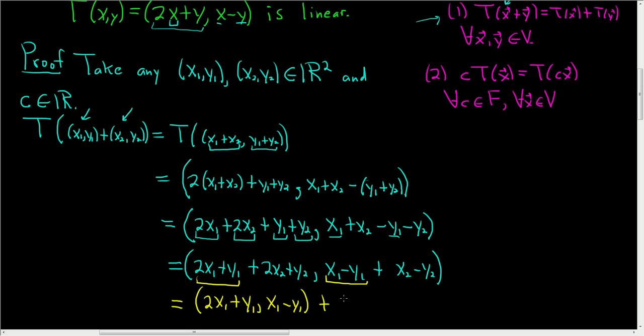And then plus, and we have this piece. This is our second x-coordinate. So 2x2 plus y2. And then here we have this piece here, x2 minus y2.